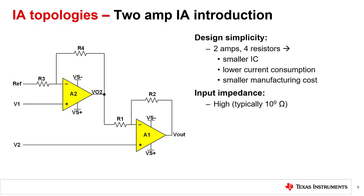In this configuration, we have an IA comprised of 2 amps and four resistors. This is considerably smaller than the 3-amp design, which reduces IC size and manufacturing cost. This configuration satisfies the two main characteristics of an idealized IA and yields high input impedance, but it does have its own set of drawbacks. Let us analyze the circuit to prove that it satisfies the idealized model of an IA and expose its drawbacks.